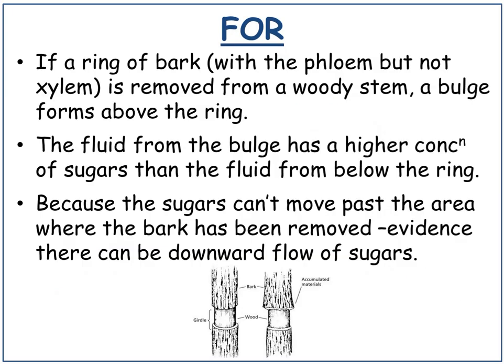If a ring of bark containing the phloem but not the xylem is removed from a woody stem, a bulge forms above the ring. The fluid from the bulge has a higher concentration of sugars than the fluid from below the ring, because the sugars cannot move past the area where the bark has been removed. This is evidence that there can be downward flow of sugars.